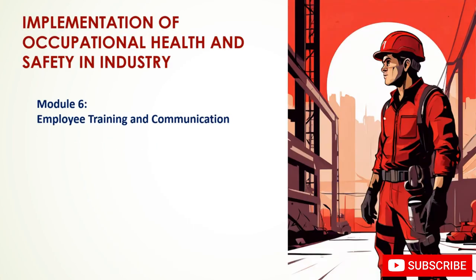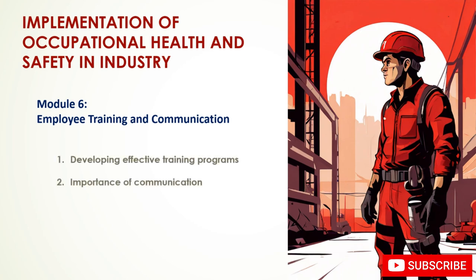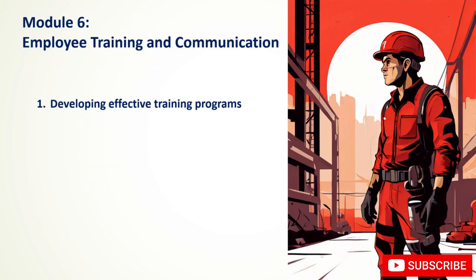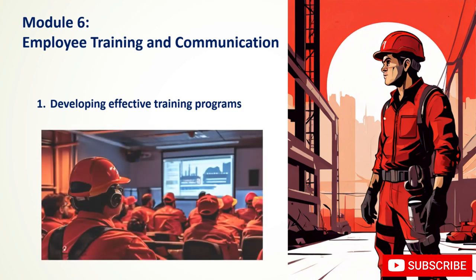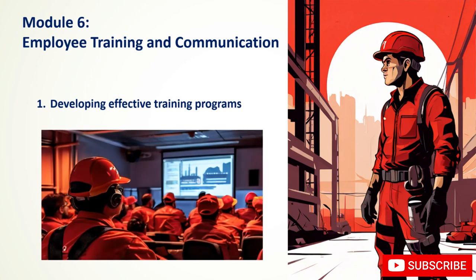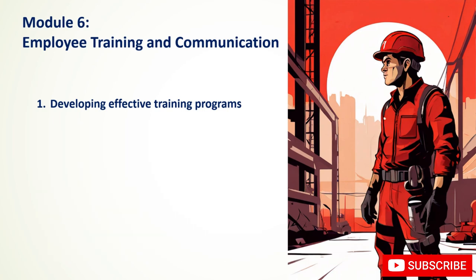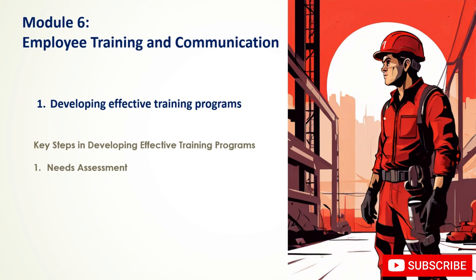Module 6: Employee Training and Communication. Effective training programs are essential for building a competent and engaged workforce and should align with organizational goals, address specific training needs, and deliver measurable results. The key steps begin with a needs assessment: identify knowledge, skill, and attitude gaps; determine training objectives aligned with business goals; and prioritize training needs based on urgency and impact. Next, define clear SMART learning objectives specifying what participants should be able to do after completing training.